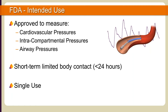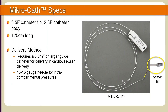It is FDA approved for short-term, less than 24 hours, single use. The Microcath's distal end contains a 3.5-French sensor case containing a side-mounted MEMS sensor. The catheter body is 2.3-French from the sensor case to the strain relief and is 120 centimeters in length. To deliver the Microcath into the cardiovascular system in interventional procedures, the catheter requires support via guide catheter with an inner diameter equal to or greater than 0.049 inches. In most cases, a 5-French multipurpose catheter will work for access into the right or left ventricle. The Microcath can also be delivered through the lumen of a 15- to 16-gauge needle to measure intracompartmental tissue pressures.